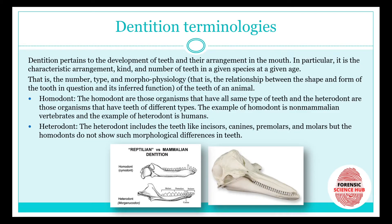Dentition pertains to the development of teeth and their arrangement in the mouth. In particular, it is the characteristic arrangement, kind, and number of teeth in a given species at a given age. So dentition relates to the development, arrangement, kind, and number of teeth present at a particular age or in a given species.